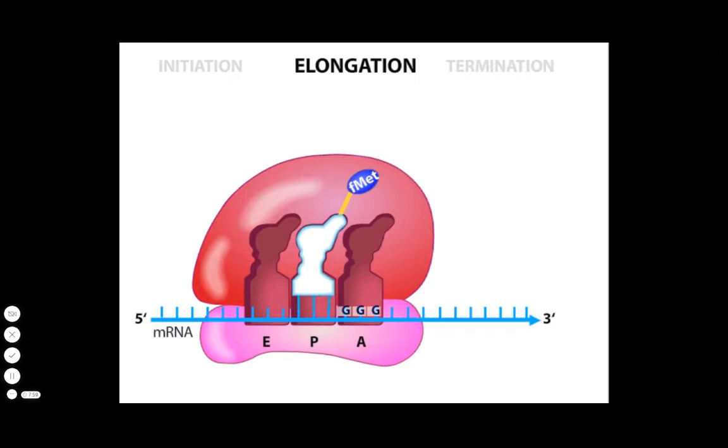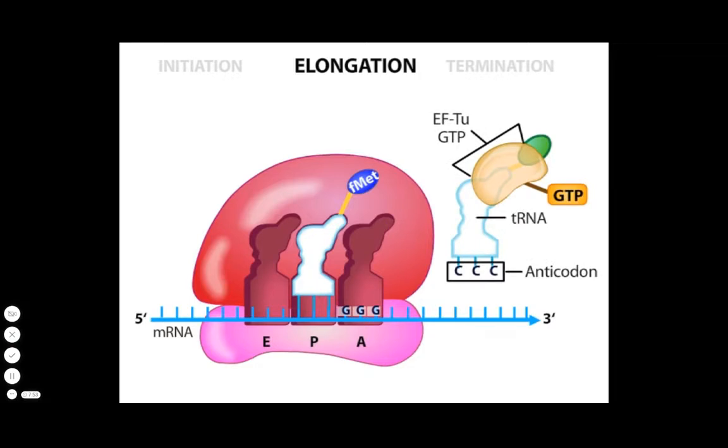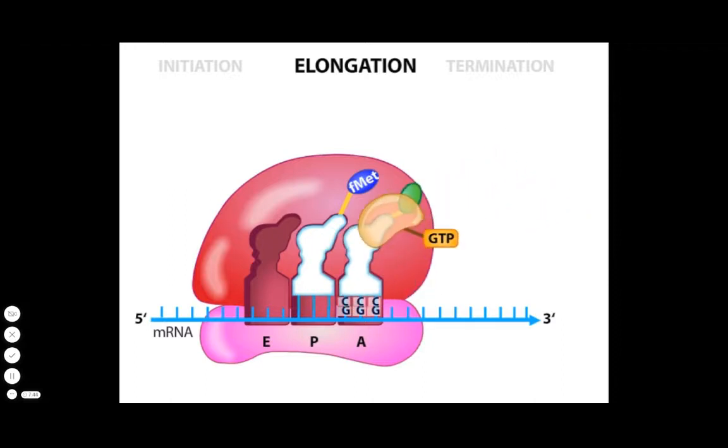Elongation involves the repetition of three steps. First, an elongation factor called EF-TU associated with GTP binds to free charged aminoacyl tRNAs. This complex enters the A or acceptor site. Correct selection of the tRNA complex depends mainly on codon-anticodon pairing. In this example, the anticodon CCC pairs with a GGG codon. The tRNA carries the amino acid glycine.